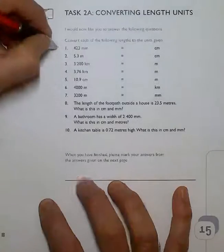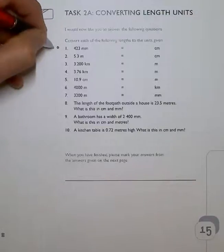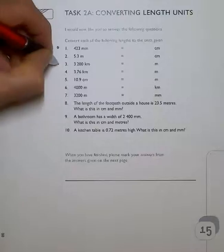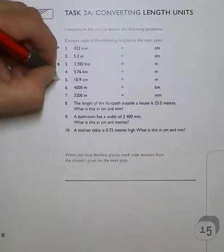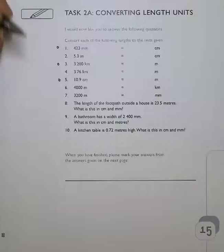Now, in each of these cases, the key thing to remember is milli means a thousandth. Kilo means a thousand. Centimeters - there's a hundred cents in the dollar.